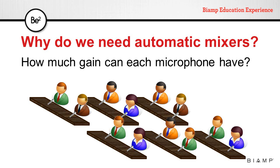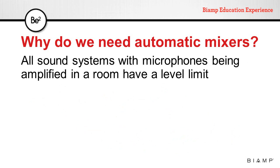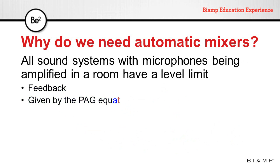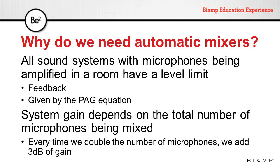The answer is not straightforward — it depends on how many microphones we have. All sound systems with microphones being amplified in a room have a level limit. This level is determined by feedback and can be given by the PAG-NAG equation. System gain depends on the total number of microphones being mixed, and every time we double the number of microphones, we add 3 dB of gain to our system.